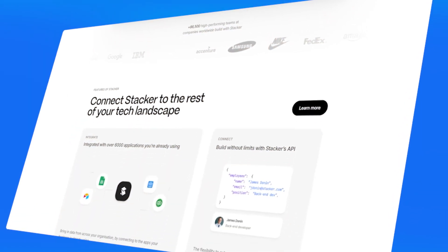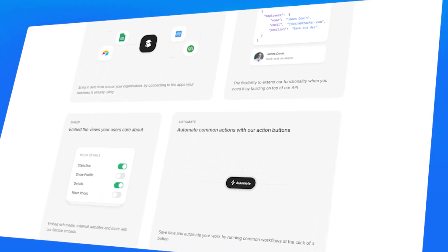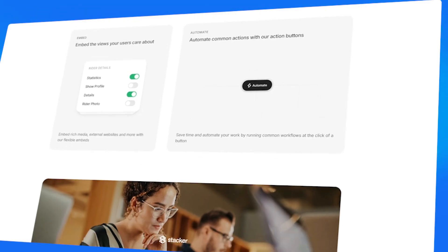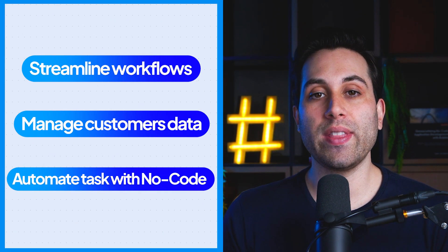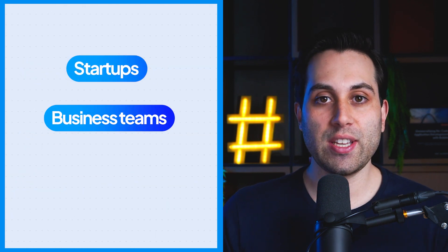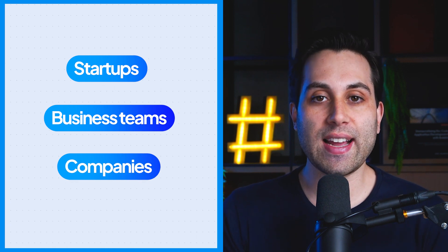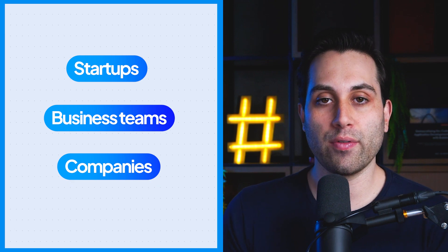You can use Stacker to connect multiple data sources into one single place. For instance, you can connect with Airtable, Google Sheets, and Salesforce, allowing you to consolidate data into one single interface. With Stacker, you can create custom and tailored solutions for your team to streamline your workflows, manage customer data, and automate tasks without using code. This tool is ideal for startups, business teams, and companies looking to organize and centralize information in a single customized platform.